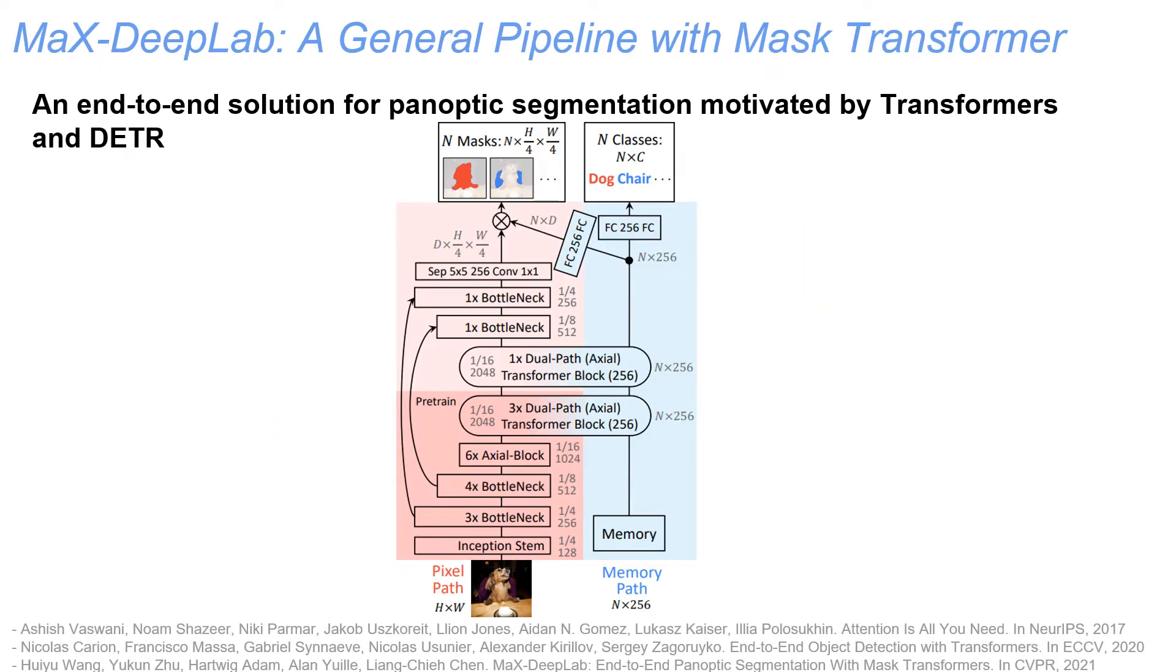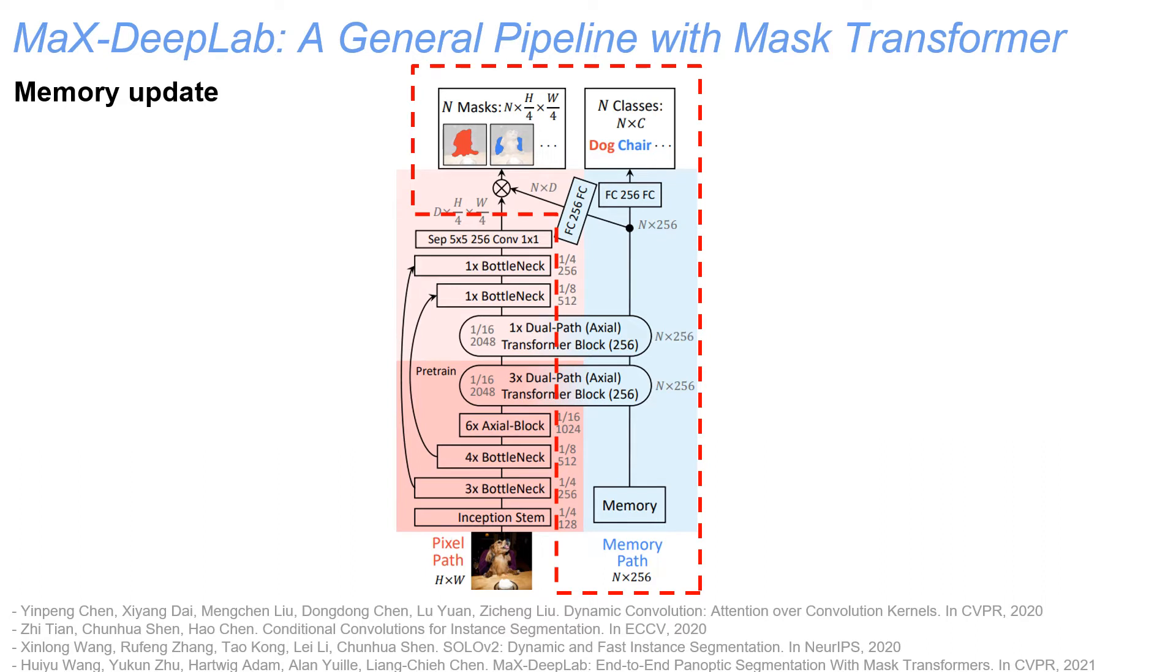Recently, inspired by Transformers and DETR, an end-to-end solution for panoptic segmentation with mask transformer has been proposed by Max DeepLab. In Max DeepLab's framework, an important part is that a set of learnable memory queries are dynamically updated by the pixel features, which are finally converted to mask and class embeddings that can derive panoptic predictions.